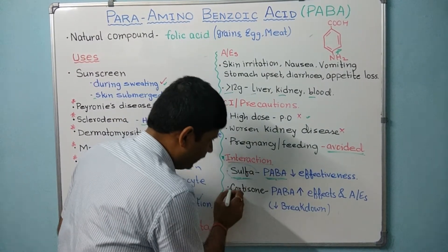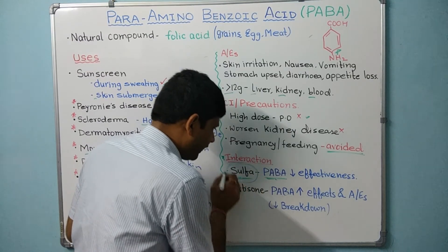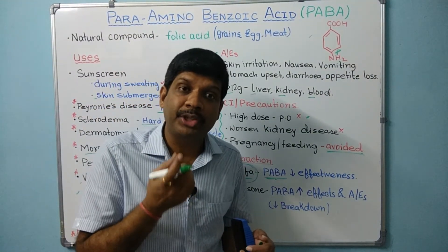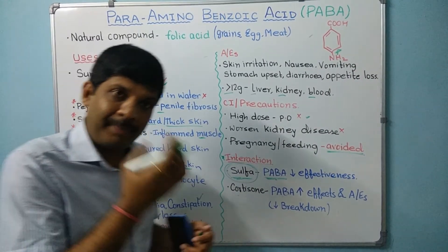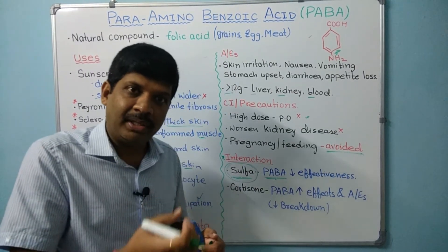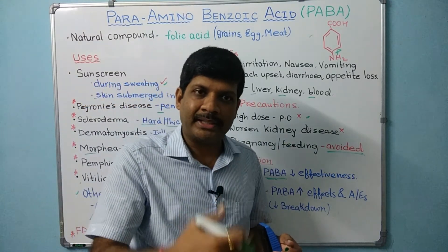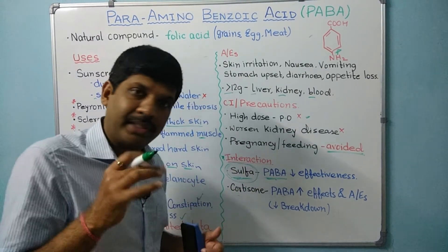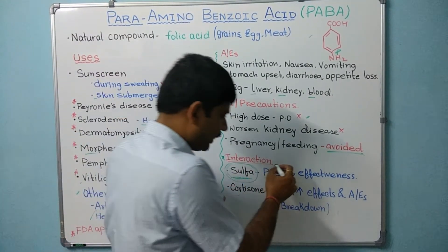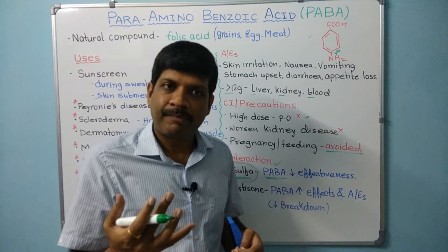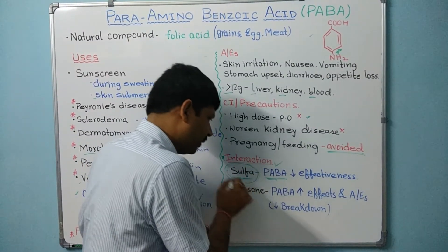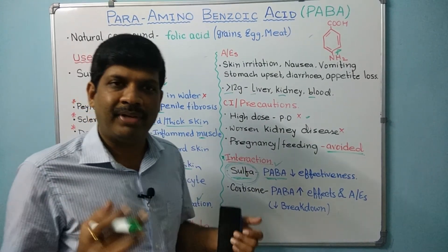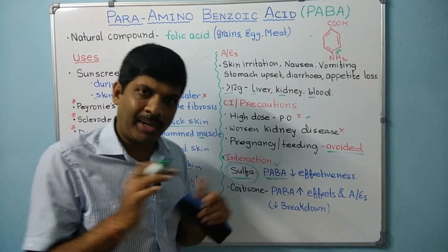Regarding drug interactions: PABA interacts importantly with sulfonamides. Sulfonamides work by inhibiting the incorporation of PABA, which microorganisms utilize for their survival — converting PABA to folic acid and then tetrahydrofolic acid. If PABA is taken from outside, there is more PABA available that cannot be fully blocked by sulfonamide, allowing microorganisms to utilize PABA effectively and thereby decreasing the effectiveness of sulfonamide.